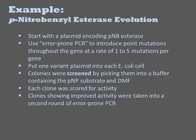Experimentally, they begin with a plasmid encoding the PNB esterase. They then use a variation on the normal PCR protocol called error-prone PCR to introduce point mutations throughout the gene at a rate of 1-5 mutations per gene.